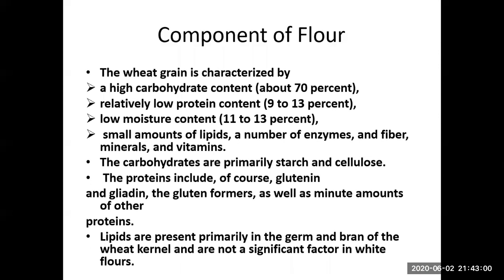Now let's look at the components of flour — what nutrients are present in flour. Wheat grain has a high carbohydrate content of about 70 percent, with relatively low protein content of only 9 to 13 percent, and low moisture content of 11 to 13 percent, though moisture can increase if flour is stored for three to six months after milling. Small amounts of lipids, enzymes, fibers, minerals, and vitamins are also present. The carbohydrates are primarily starch and cellulose — polysaccharides — which gelatinize during baking.